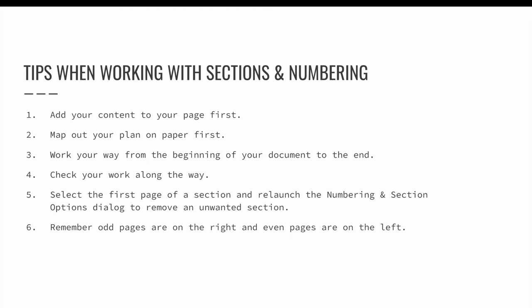It is a good idea to keep your sections as simple as possible when you are learning how to create sections and adjust document numbering — things can get out of hand really quickly. Here are some basic tips: First, add your content to your pages so you can see exactly where a new section starts. Second, map out your plan on paper first so that you truly understand exactly what you are trying to do. Third, work your way from the beginning of your document to the end because your changes will flow downhill. Fourth, check your work along the way — you don't want to get to section 10 and realize that you did something wrong in section 3. Fifth, select the first page of a section and relaunch the Numbering and Section Options dialog if you ever need to remove an unwanted section — simply uncheck the Start Section option to get rid of it. If you adjusted additional settings like the prefix or numbering order, you will want to reverse those settings too.